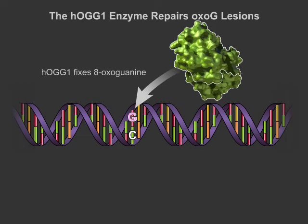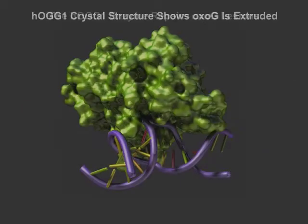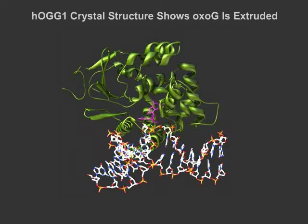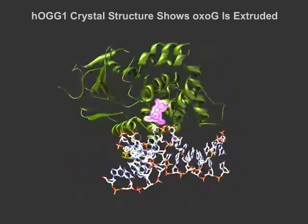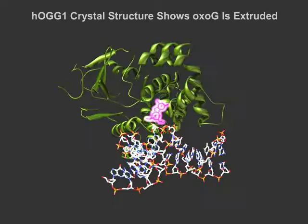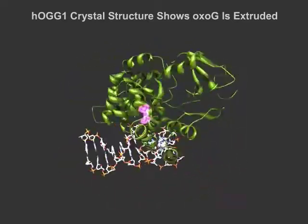If the oxoguanine lesion is not corrected by the repair enzyme, it can be lethal to the cell. It has been established that HAG1 extrudes oxoguanine out of the DNA helix to cleave and repair the lesion. Yet it is still a mystery how HAG1 can differentiate between the guanine and oxoguanine bases. The Verdine lab at Harvard University is currently tackling this research question of how HAG1 searches DNA.